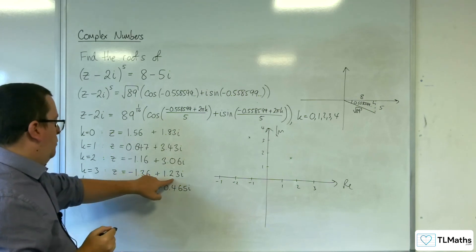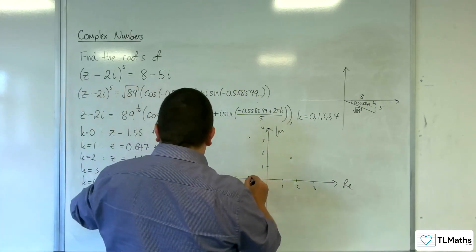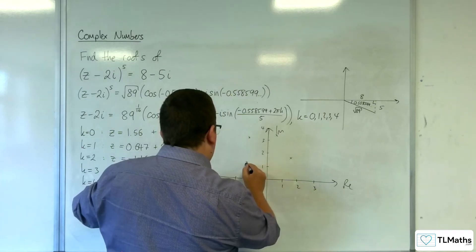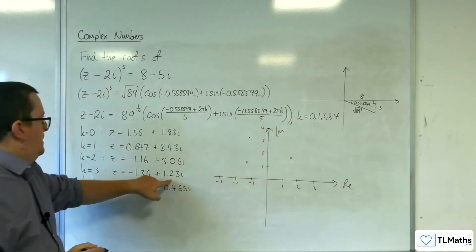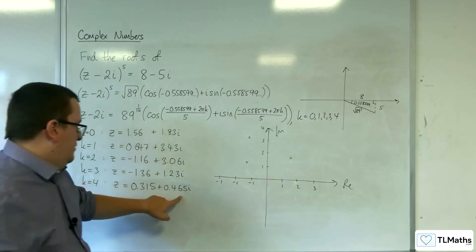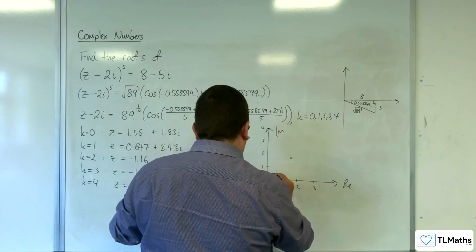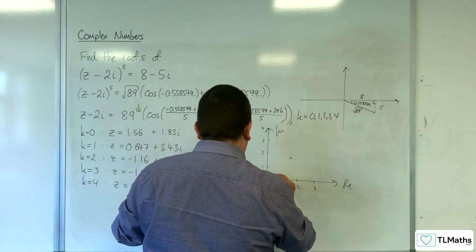Minus 1.36 plus 1.23. So something like there, maybe. And 0.315 plus 0.465. Something like that.